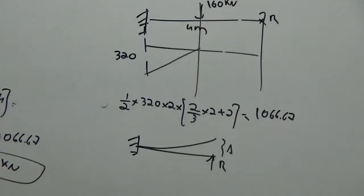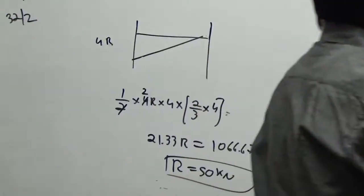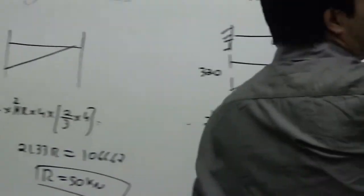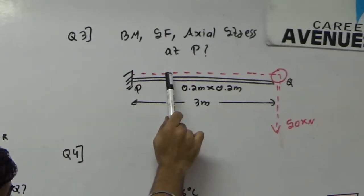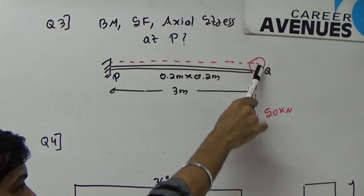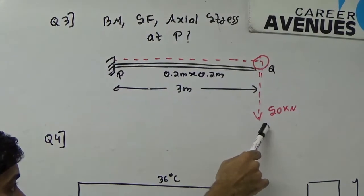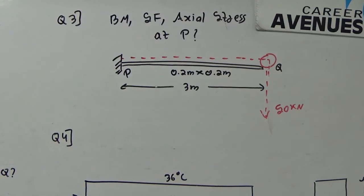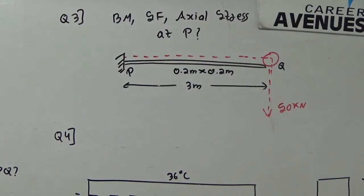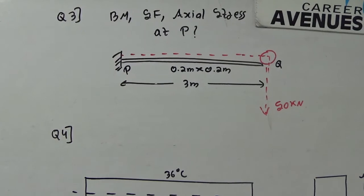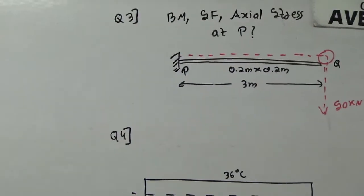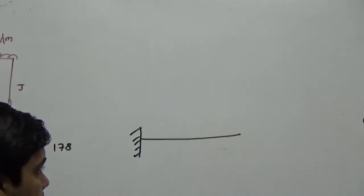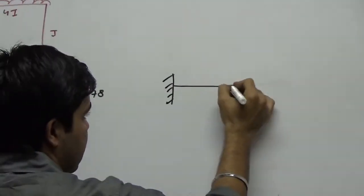The next problem is even simpler. In this problem, it is just a pulley given. There is a fixed beam and there is a cable connecting a pulley at this end which is having a hanging load of 50 kN. Let me just simplify the diagram because everything is about how to play with the problem.